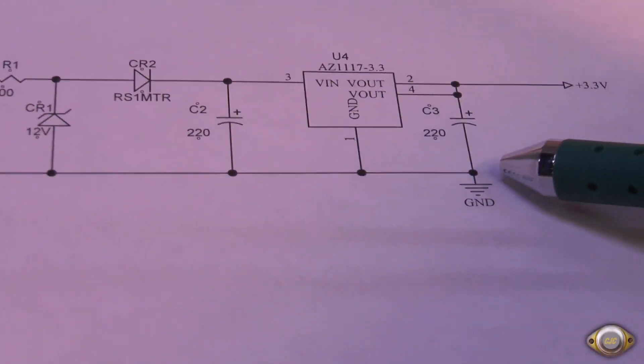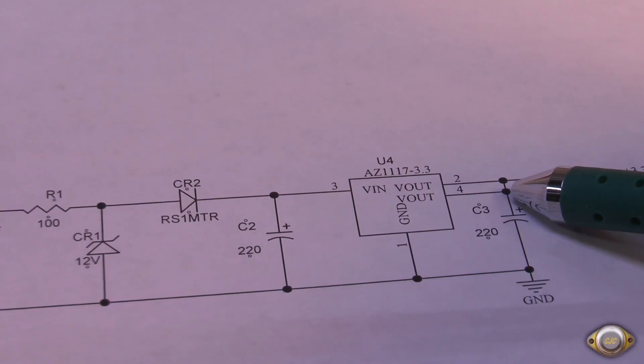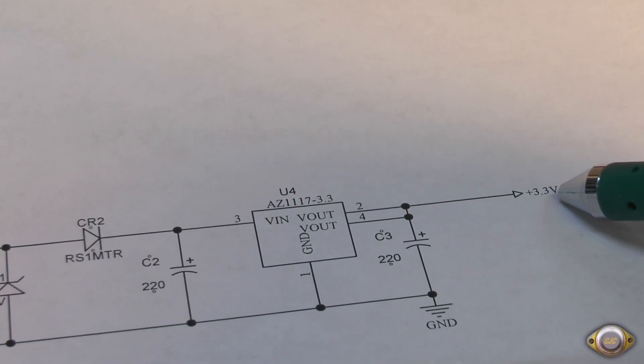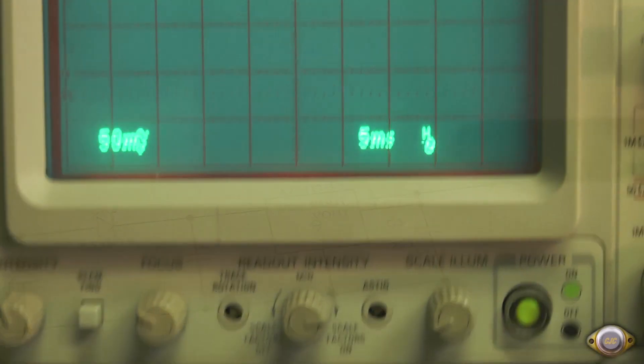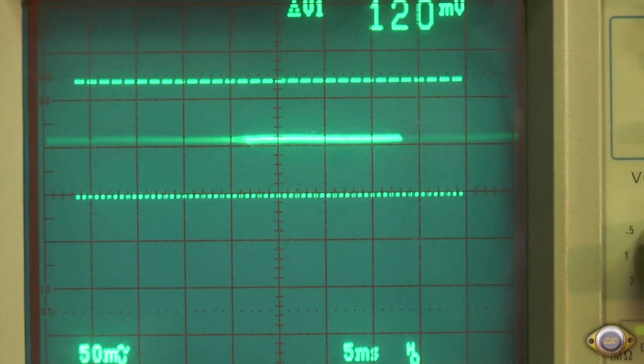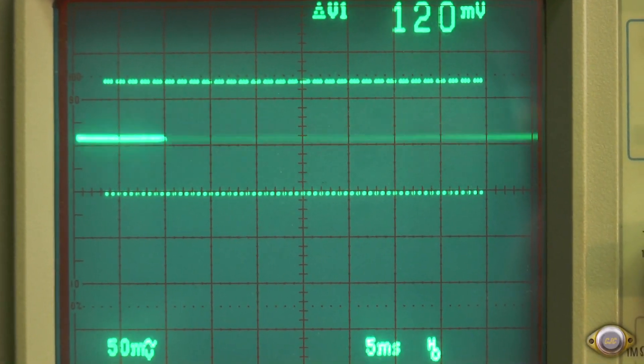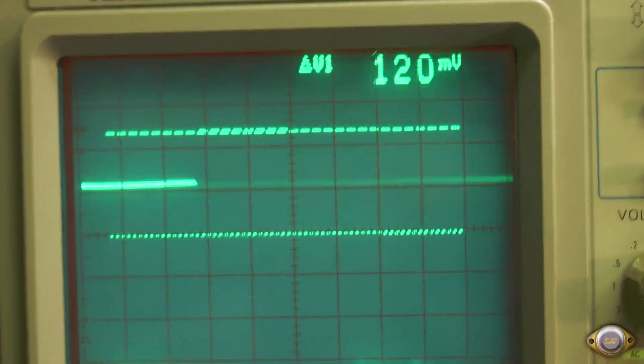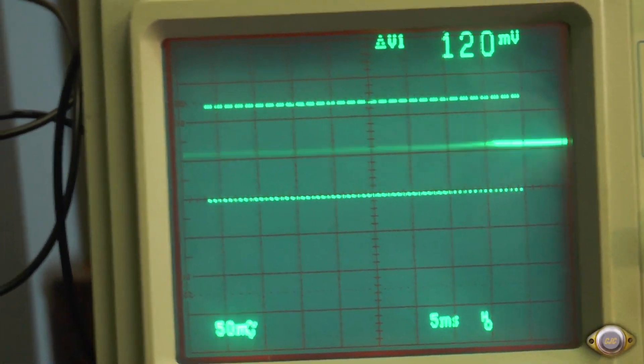Now we'll measure the output of the regulator for ripple. Right now it's at 3.3 volt. That's with the scope sensitivity all the way up and there's no ripple to be seen. So at least the circuit is clean coming out.